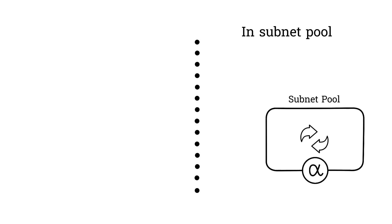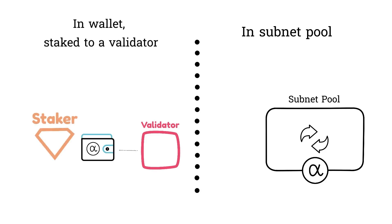There are only two states or places where alpha exists, either in a subnet pool or in a wallet staked to a validator. Alpha cannot be in a state where it's in a wallet and not staked to a validator.